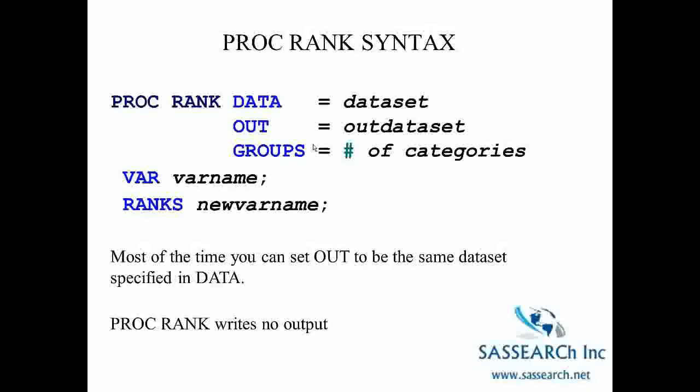So here is the syntax for PROC RANK. Data is the input data set. The OUT option is the output data set that will contain the new variable or variables. Since this data set will also include all variables in the original data set, you can usually specify the OUT data set to be the same as the input data set specified in data. And I would do that only when you're working with temporary data sets. GROUPS is set to the number of categories you want to divide the variables into. So for example, GROUPS equals 5 would create quintiles. With the VAR statement, you list the continuous variable for which you want to create new categorical variables for. And the RANK statement lists the names you want to call the new variables. Since PROC RANK is just creating a data set, no output will go to the output window.